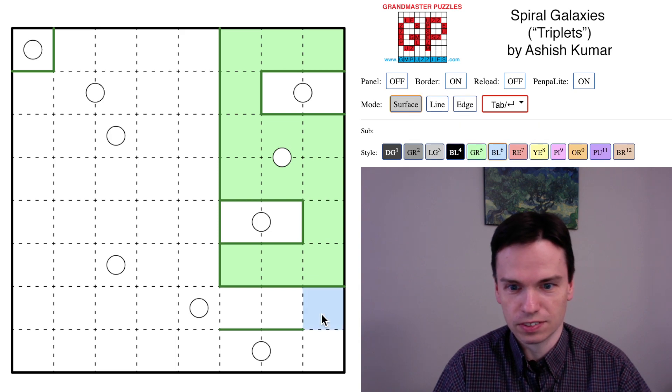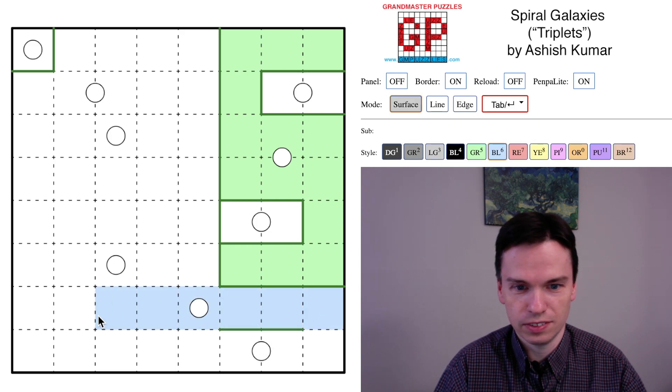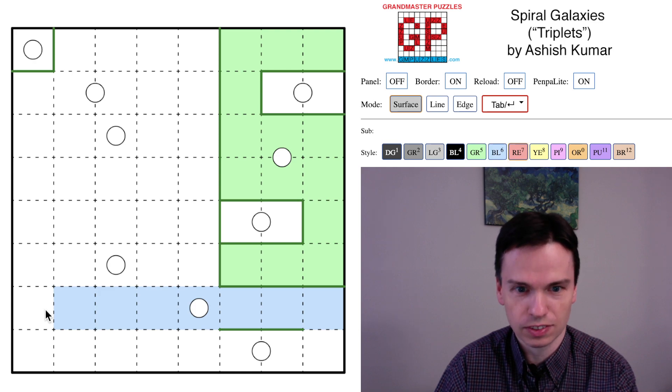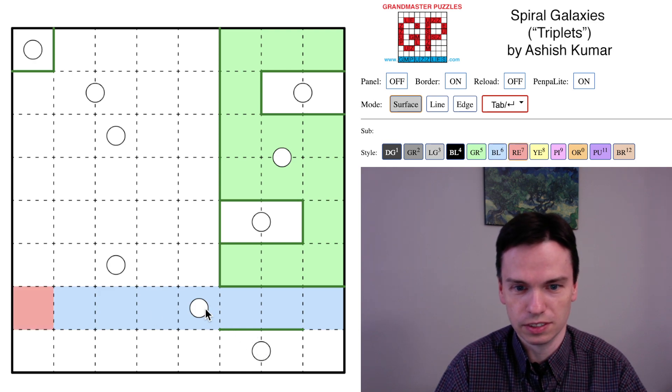That now gets us a cell like this which can't join this galaxy, so it's going to come across and that's going to give us a cell like this which can't join into these. It can't join at the top, so this is going to be part of red.